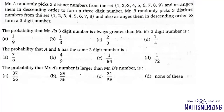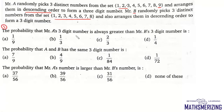Now here the question is: Mr. A randomly picks 3 distinct numbers from the set {1, 2, 3, 4, ..., 9} and arranges them in descending order to form a 3-digit number. Mr. B randomly picks 3 distinct numbers from the set {1, 2, 3, 4, 5, 6, 7, 8} and also arranges them in descending order to form a 3-digit number. The first question is: find the probability that Mr. A's 3-digit number is always greater than Mr. B's 3-digit number.